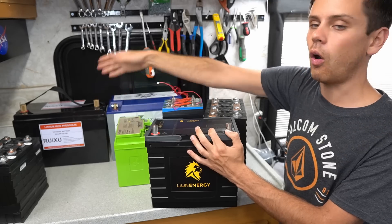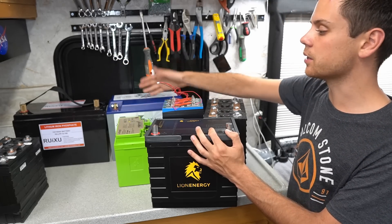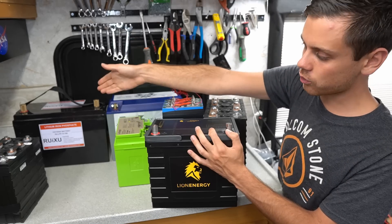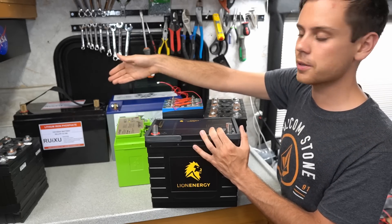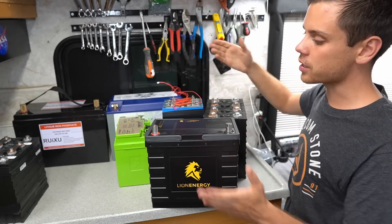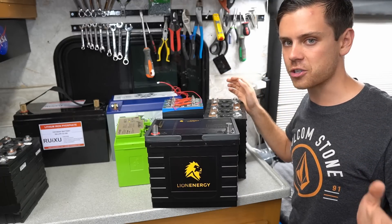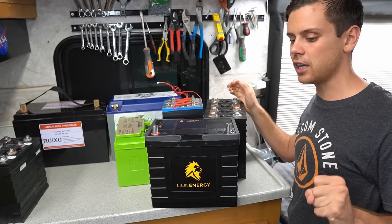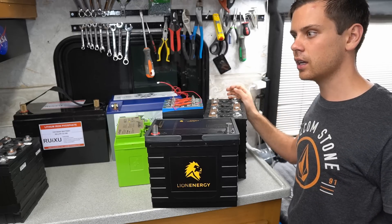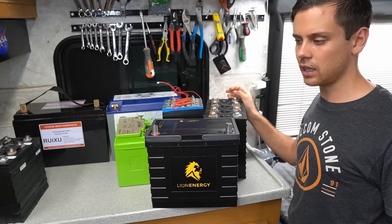And the Rooksu blows all the other drop in lead acid replacements away because of the price. I mean literally if you get a Rooksu and you get a Victron low temperature connect with battery sense you are done and you are saving so much money. You're saving like $350 off of each battery. If you buy four batteries that's a lot of money. That's crazy.